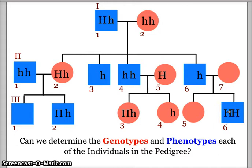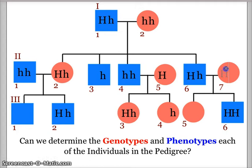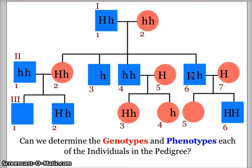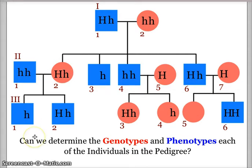Looking at generation two individual six, his son has Huntington's disease with two capital H's, meaning the son has to get a capital H from both parents — so the dad must have a capital H, and the mom also has to have a capital H. Over in generation three individual one, we know he has to get a little h from his dad.